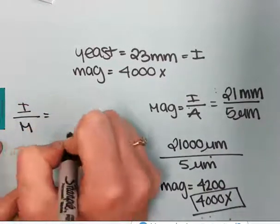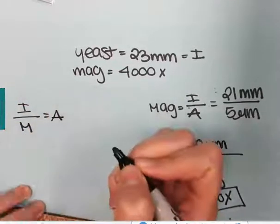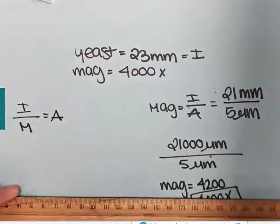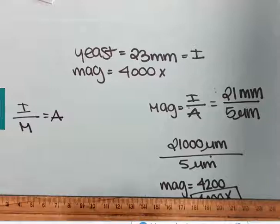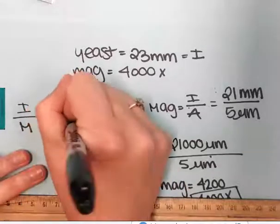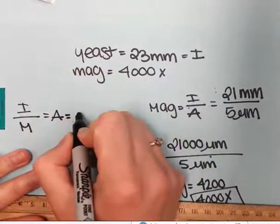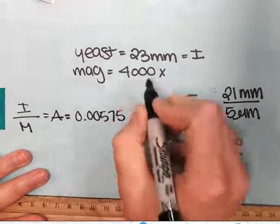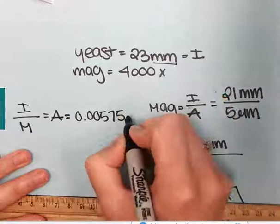It's image divided by magnification gives me the actual size of a yeast cell, approximately based on that. I have 23 divided by 4,000, which gives me 0.00575, and because this was in millimeters, this is millimeters.